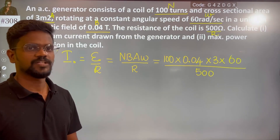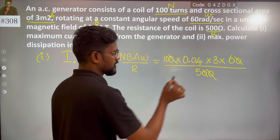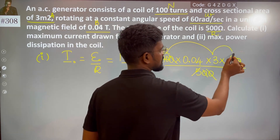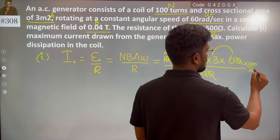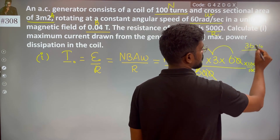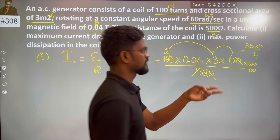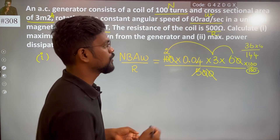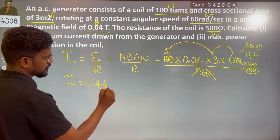Now we cancel: zeros cancel, 5 and 10 gives 2. Then 2 times 3 is 6, 6 times 6 is 36, 36 times 4 gives 144. So the result is 1.44. Your maximum current is 1.44 ampere.